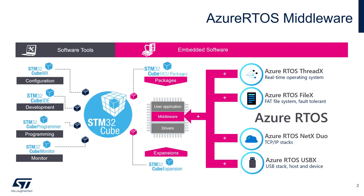Here is a little recap about the Azure RTOS middleware offering. In terms of middleware, first we have Azure RTOS ThreadX, which is a real-time operating system. Then we have Azure RTOS FileX for file system storage. We also have Azure RTOS NetX Duo for TCP/IP stacks. And finally, Azure RTOS USBX, which is the USB stack for host and device — and this is what we'll be using today during this lab.